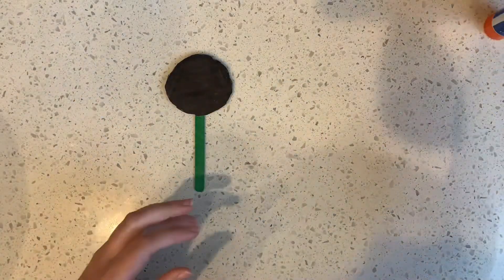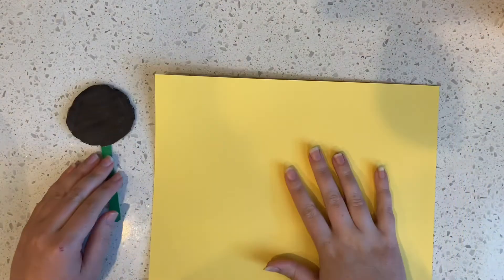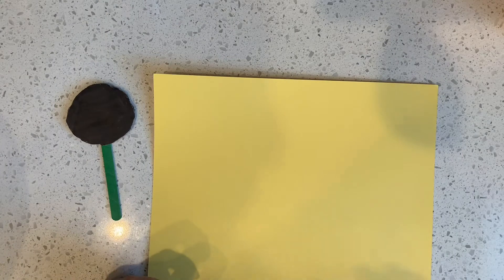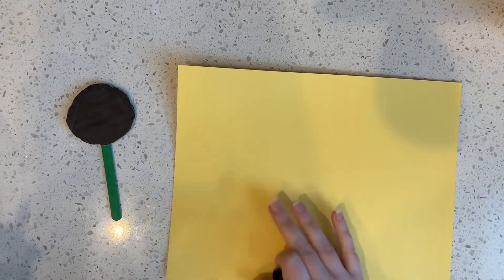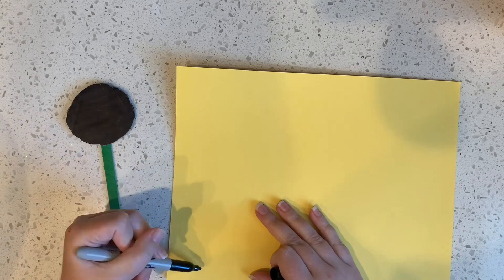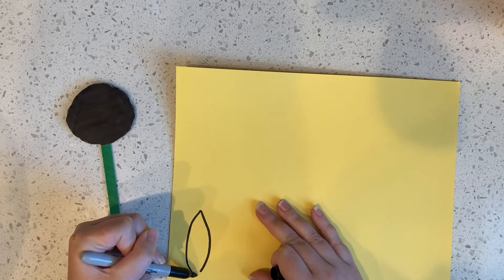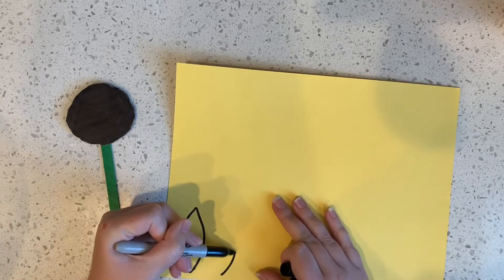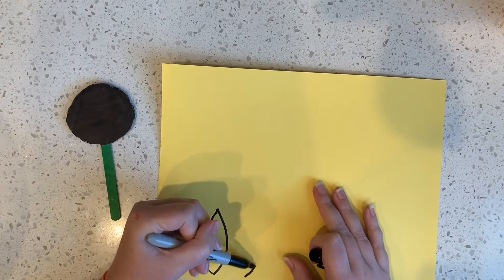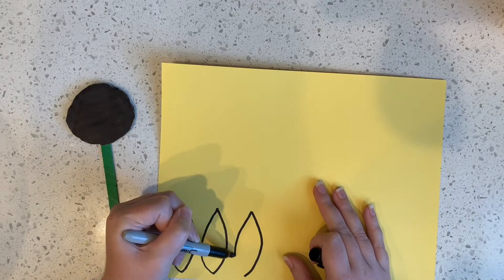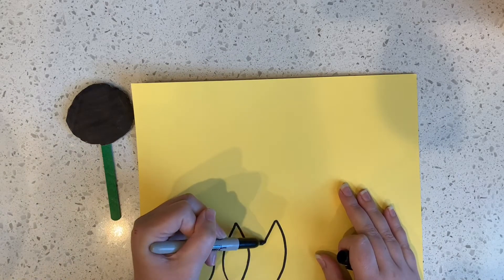The next step is we need some petals for our sunflower. And what color are sunflower petals usually? Yellow. Sometimes they're kind of a deep like orangey color, but a lot of time we think of them as yellow. So I like to do this by drawing some petal shapes and cutting them out. And you can make as many as you want. And they can be big, they can be small. That's up to you.